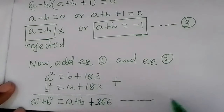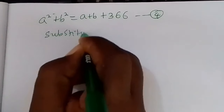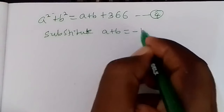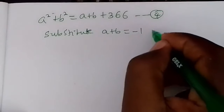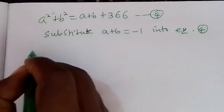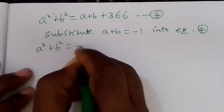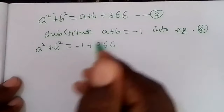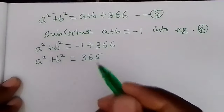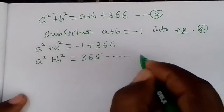Now in equation 4, substitute the value of a plus p equals negative 1. It follows that a squared plus p squared equals negative 1 plus 2/3, which gives us a squared plus p squared equals... substituting gives 365. We call this equation 5.